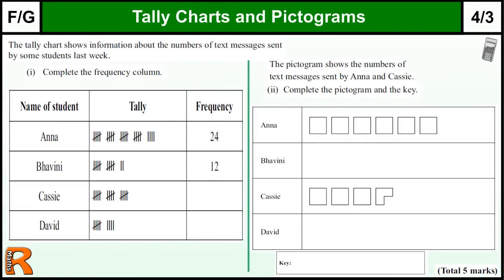Tally charts and pictograms, grade FG, GCSE level 3 for national curriculum. Here we have a question where we've got a tally chart already drawn. Things we need to be aware about tally charts is every fifth line we draw a bar to group them together into five. Got 5, 10, 15, 20, 1, 2, 3, 4.